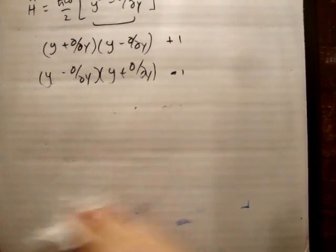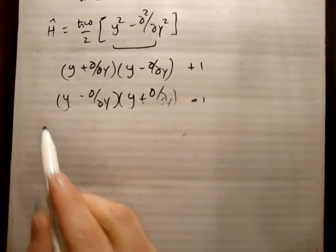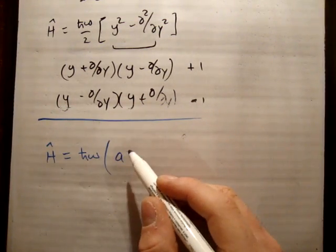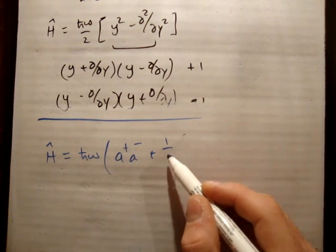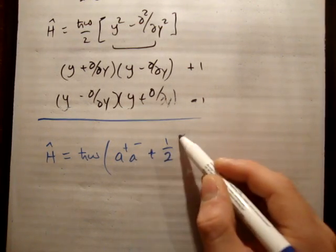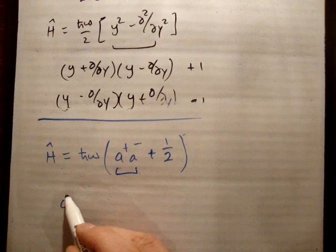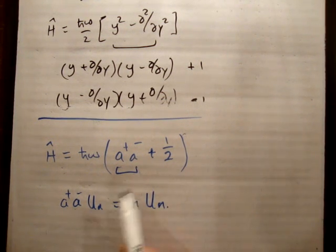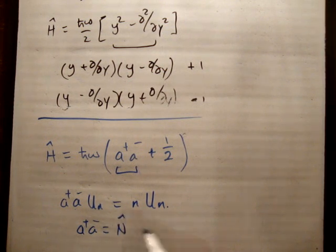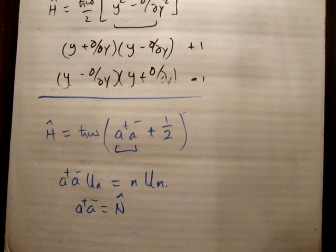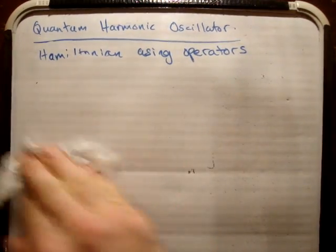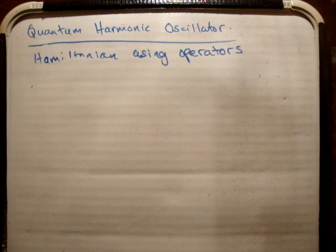So finally we can rewrite the Hamiltonian as h-bar omega times (A plus · A minus + 1/2). And I showed in a previous video that if you apply A plus · A minus to the eigenstate u_n, you get n times u_n. So we call A plus · A minus the number operator, because it gives you the number of units of energy you are above the ground state energy. That's one way of writing the Hamiltonian. Both ways are equivalent — one is perhaps easier to remember and one is easier to work with.